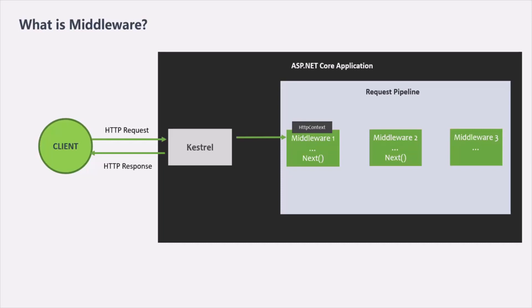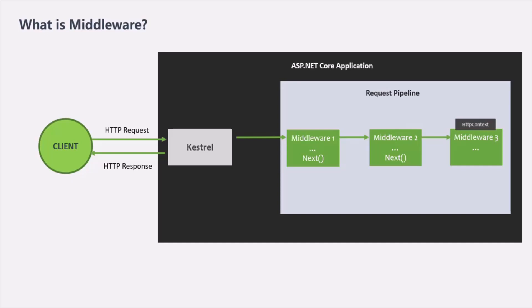Once the first middleware has done processing the request, it passes the HTTP context object to the next middleware by calling the next function. This HTTP context object also has a request and response object because it is the same HTTP context object. But here, the request and response were first manipulated in middleware one, so middleware two receives those manipulated objects — not the original ones. In the second middleware, some logic will be executed, and once done, the HTTP context object is passed to the next middleware. This continues until the HTTP context object has reached the last middleware.